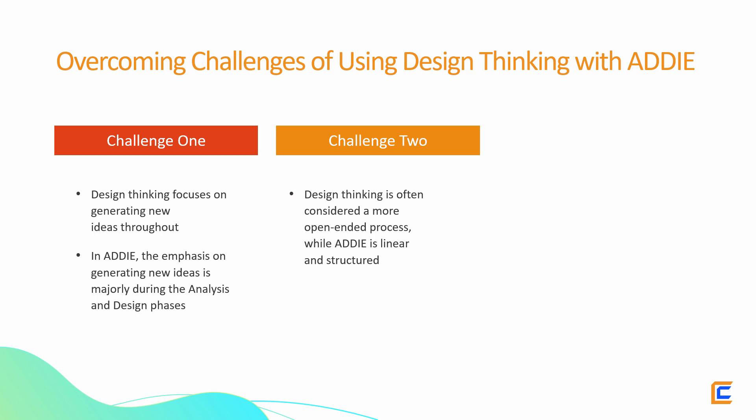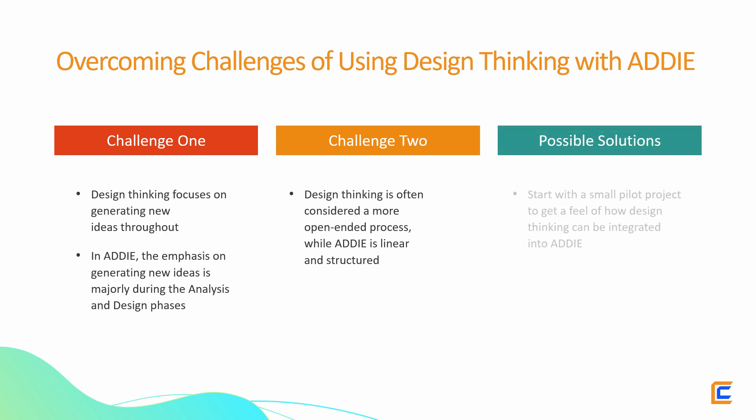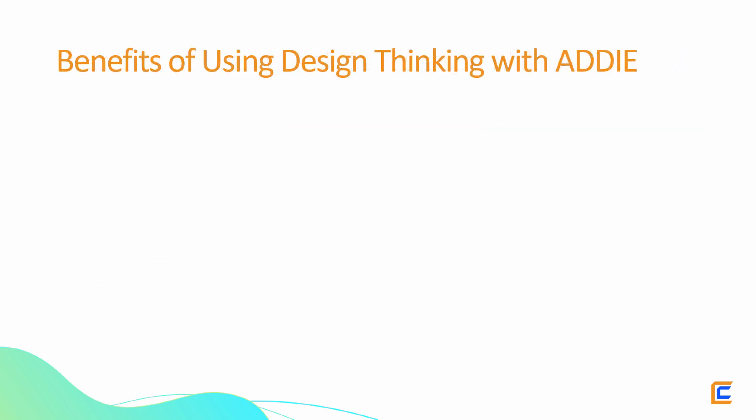Another challenge is that design thinking is often considered a more open-ended process while ADDIE is linear and structured, making it hard to know where to start. However, there are ways to overcome these challenges — for example, try starting with a small pilot project to get a feel for how design thinking can be integrated into ADDIE, or focus on using design thinking during the analysis and design phases rather than trying to use it throughout the entire process.